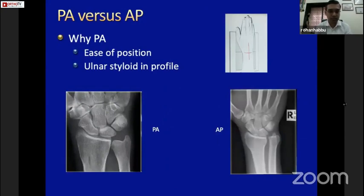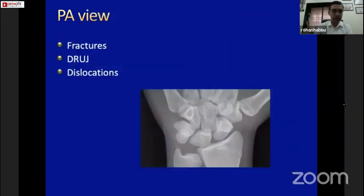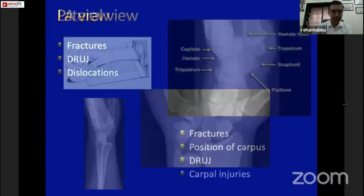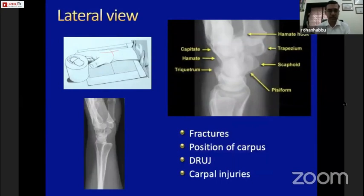We always prefer a PA view because it's very easy to place an injured wrist with the palm flat on the surface rather than the other way around, and it also gives you the ulnar styloid profile so you can pick up a majority of injuries on the ulnar side. A good PA view will give you almost 90% of the fractures — smaller ones on the volar or dorsal lip could be missed, but you can pick them up on the lateral view.